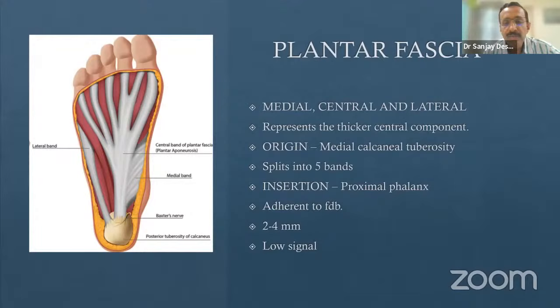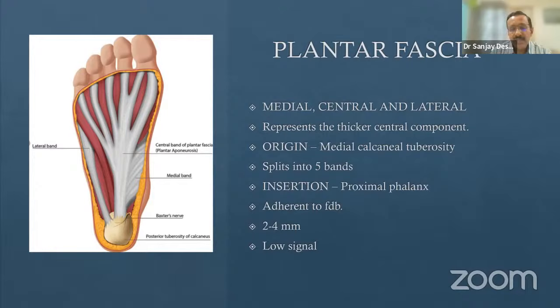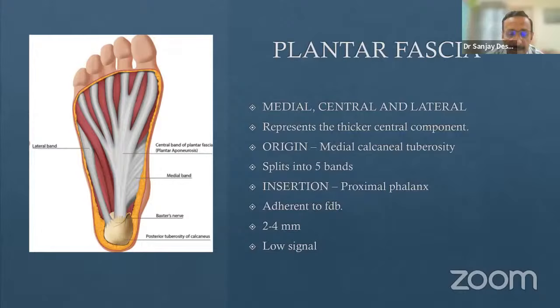The plantar fascia is a thickened deep fascia extending from the base of the calcaneum anteriorly into the different digits. It has three components: medial cord, central cord, and lateral cord. When we say plantar fascia without qualification, we mean the thicker central component. It originates from the medial calcaneal tuberosity and splits into five bands for the five toes, inserting at the level of the proximal phalanx. It should not be more than two to four millimeters in thickness and should be low signal on all sequences.